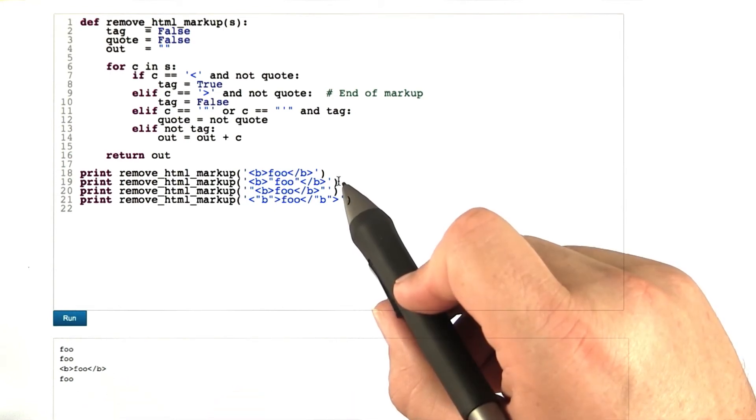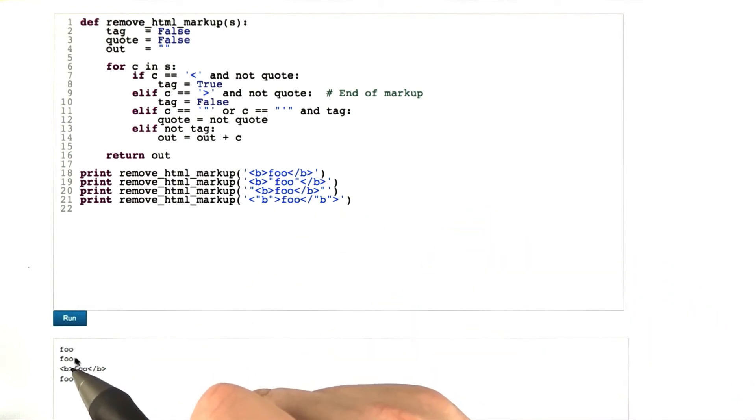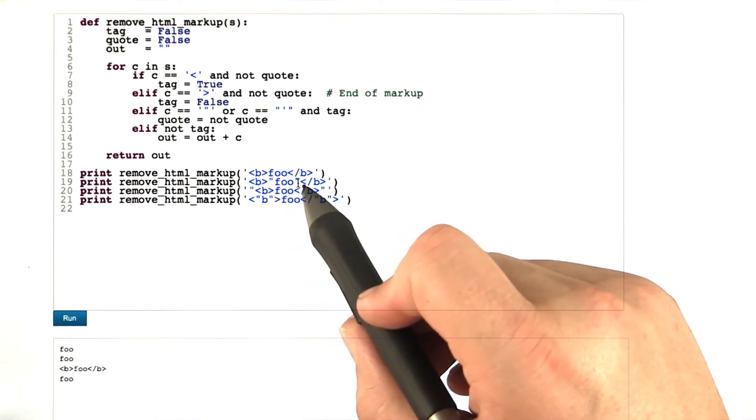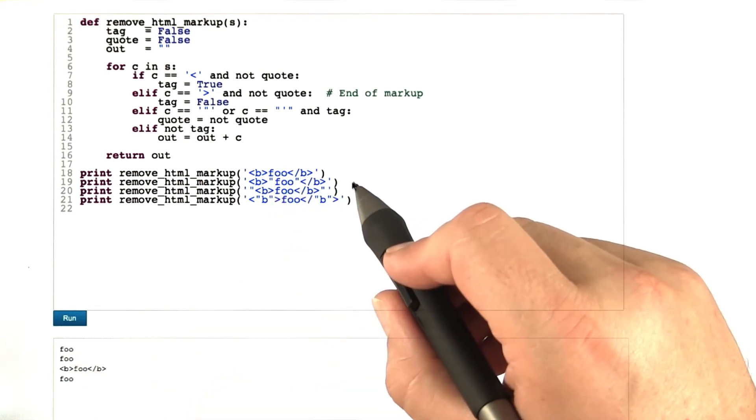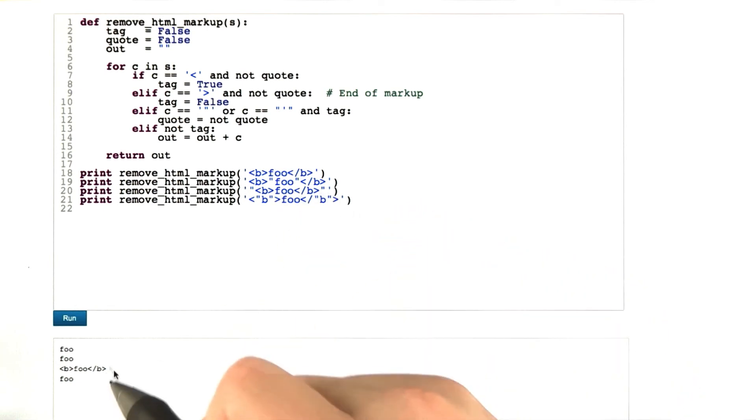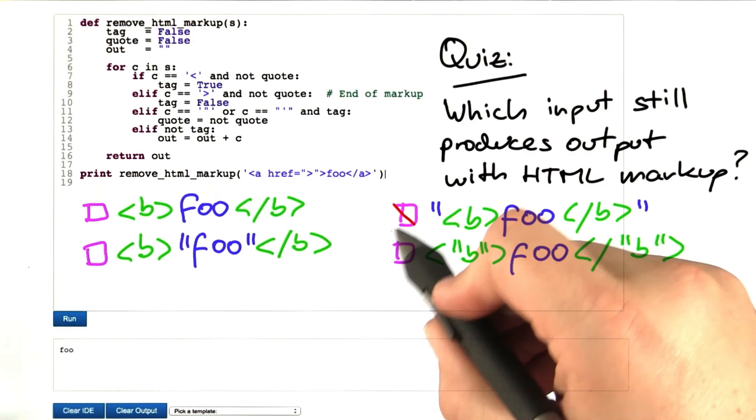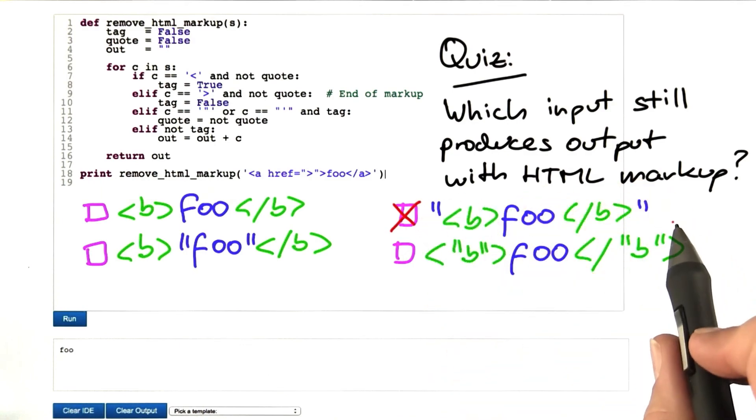But for the second input, something fishy is also going on, because the quotes that are actually part of the text have been removed. In our quiz, we only care for the HTML markup, so the third input definitely produces HTML markup. And therefore, this is the correct answer.